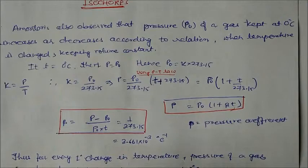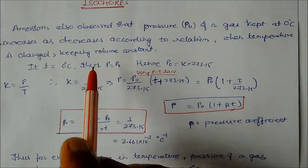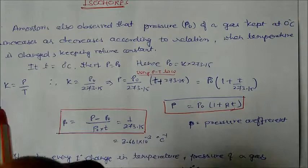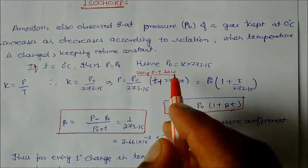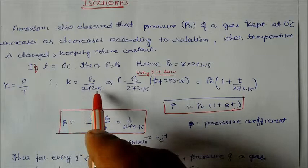Amonton observed that pressure of a gas at zero degrees increases according to the relation when temperature is changed, keeping volume constant. If you take T = 0, the pressure P₀, you can calculate P₀ = K × 273.15, so K = P₀/273.15. This is the pressure-temperature law.